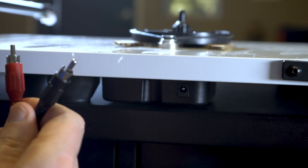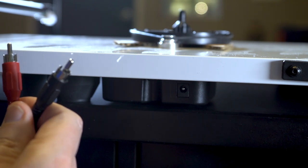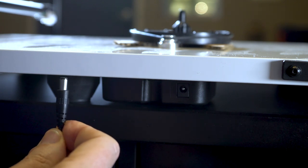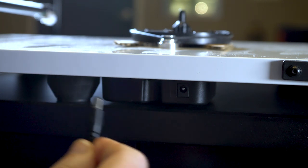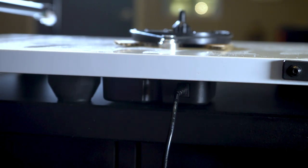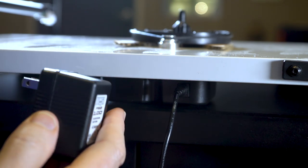The next step is to connect the power supply for the turntable. This is what the end of the power supply looks like. And you simply connect it right here on the bottom side of the turntable. The other end goes into power.